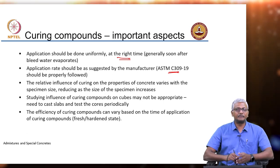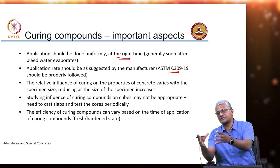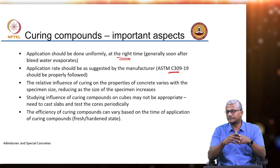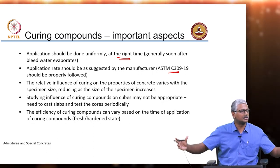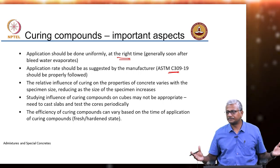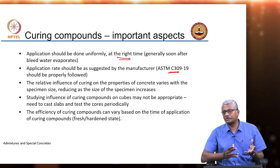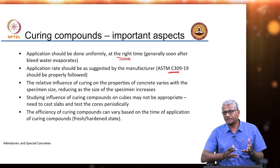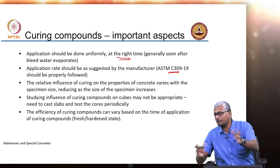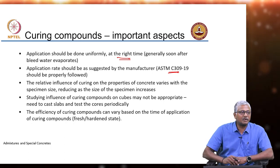When you cure small specimens versus larger specimens, the efficiency of curing is quite different. In large specimens where volume is huge, the surface area to volume ratio is quite small. In small specimens like cubes, the surface area to volume ratio is going to be high. So the curing efficiency if you are testing on cubes versus testing on a slab will give quite different answers.